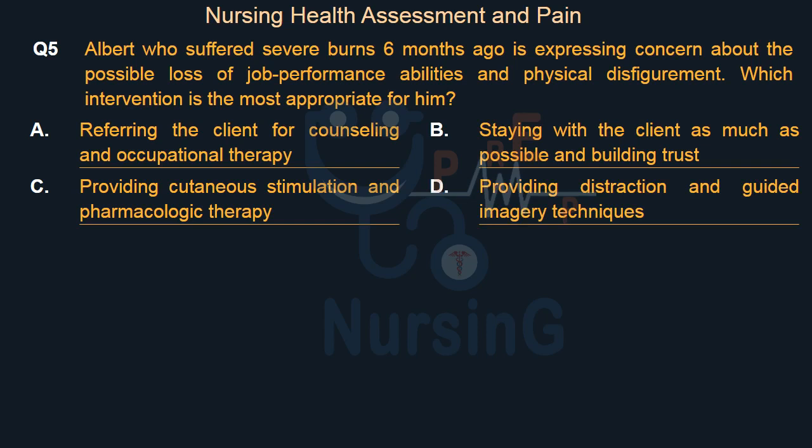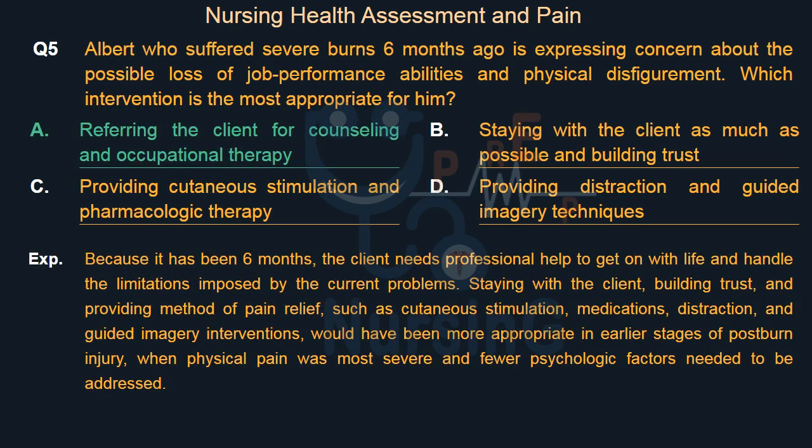The right answer is Option A: Referring the client for counseling and occupational therapy. Because it has been six months, the client needs professional help to get on with life and handle the limitations imposed by current problems. Staying with the client, building trust, and providing methods of pain relief such as cutaneous stimulation, medications, distraction, and guided imagery would have been more appropriate in earlier stages of post-burn injury, when physical pain was most severe and fewer psychological factors needed to be addressed.